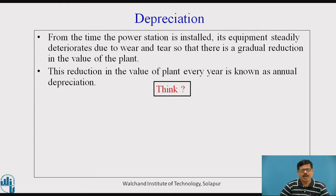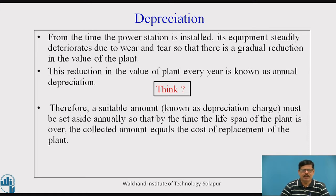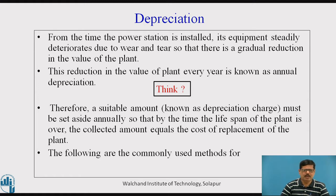If the plant or equipment value goes on reducing every year, after its useful life, what provision should be made so that we can replace the equipment or plant by a new one? What is usually done is that we keep aside a suitable amount, which is called the depreciation charge, and it must be set aside annually so that by the time the lifespan of the plant is over, the collected amount will be equal to the cost of replacement of the plant. Following methods are commonly used for determining the annual depreciation charge.